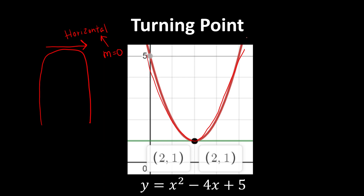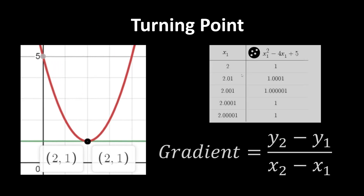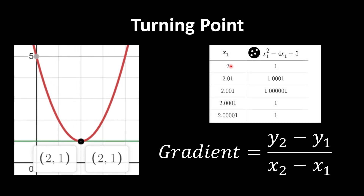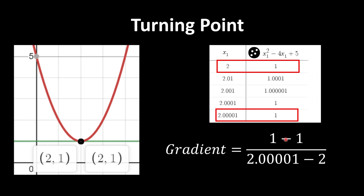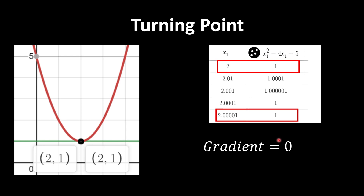Let's try to find whether (2, 1) is the point where the gradient is 0. In order to find the gradient at x = 2, we find two points very close to each other — essentially the gradient at that particular point. We plug in the value, and indeed our assumption is correct.